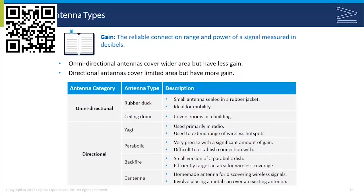One of the ways that you can control wireless connectivity is by choosing the right antenna type. There are two main categories for antennas: directional and omnidirectional.